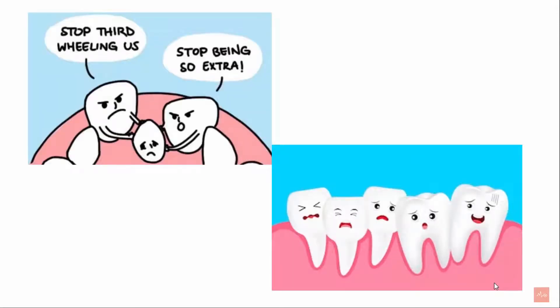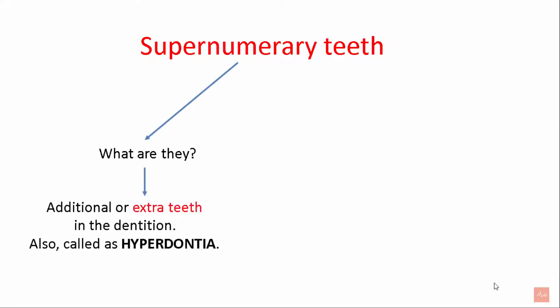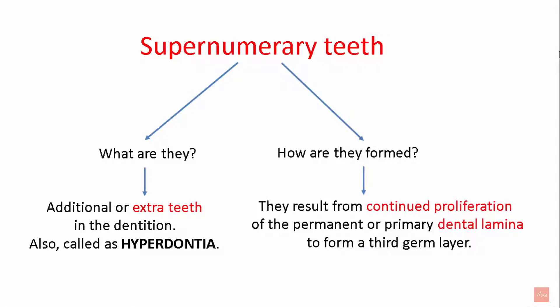Supernumerary teeth are nothing but extra teeth. They are additional or extra teeth in the dentition, also called as hypodontia. They result from continued proliferation of the permanent or primary dental lamina to form the third germ layer.